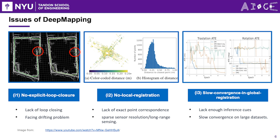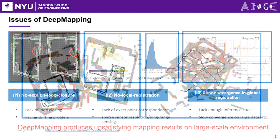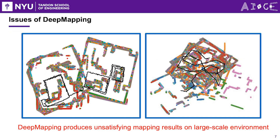Third, slow convergence in global registration. Lnet regresses a single frame of point cloud into a global pose, supervised only by the Mnet and BCE losses. Unlike pair-wise registration, this global registration lacks enough reinforced cues to output correct poses, leading to slow convergence when the dataset is large. In conclusion, the original DeepMapping method, even when using the original toy dataset with 1024 frames, fails to converge in large-scale environments.